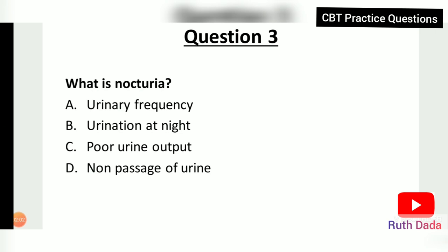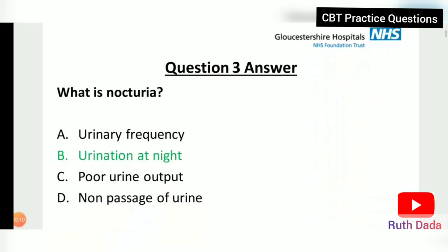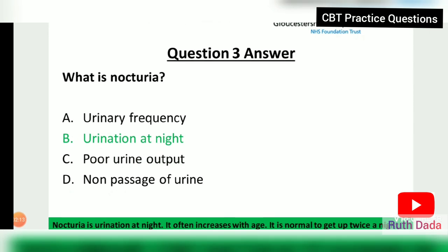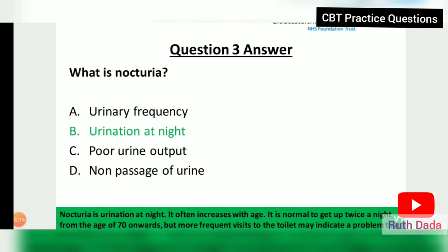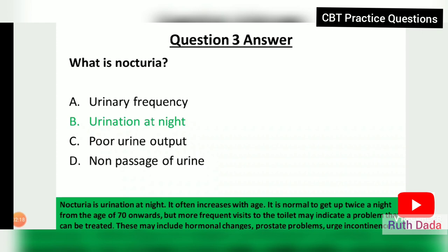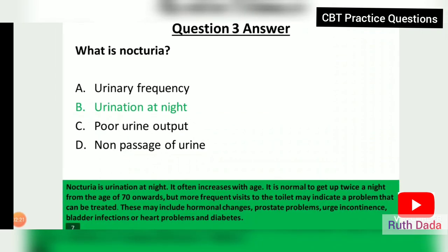Question 3: What is nocturia? The answer is B, urination at night. Nocturia increases with age and it is normal to get up once a night from age 70 upward, but more frequent visits to the toilet may indicate a problem such as hormonal changes, prostate problems, urge incontinence, bladder infections, or diabetes.